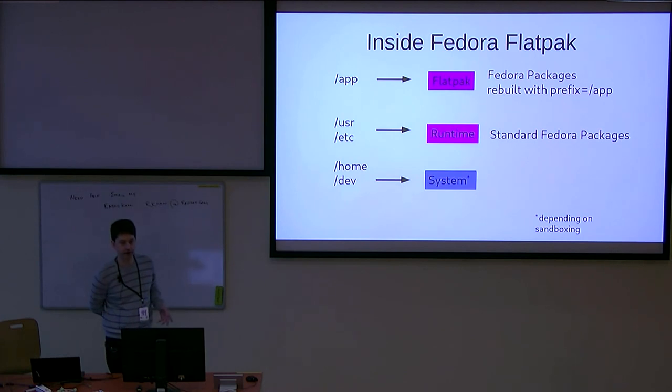With a Fedora Flatpak, this /app directory is made up of Fedora packages. But since they're located in /app, we actually have to rebuild them, because standard Fedora packages have a prefix of /usr. We have to rebuild the source code to change where they're located. The runtime, on the other hand, is made up of absolutely standard Fedora packages, just the same ones you would install in a normal Fedora.